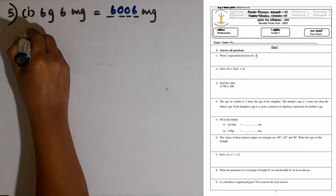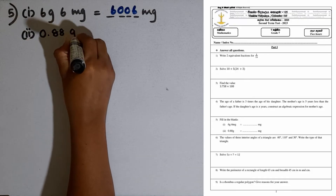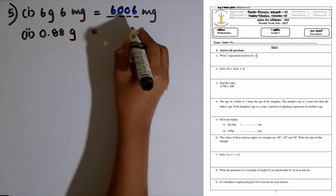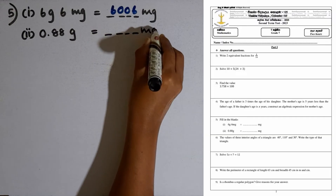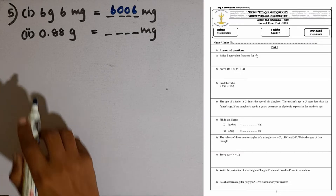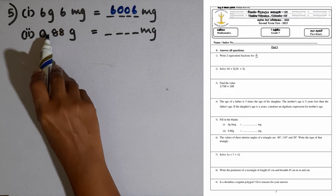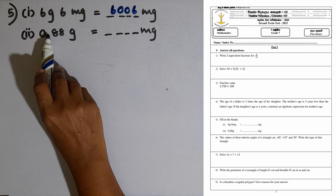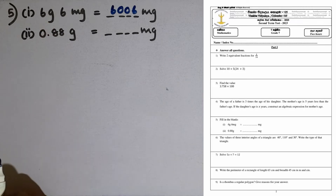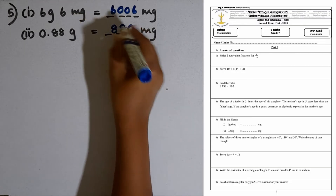Then the second part: 0.88 grams. We have to convert this into milligrams. 1 gram is equal to 1000 milligrams, so when converting grams to milligrams, we multiply by 1000. If you multiply this decimal number by 1000, the decimal point goes three places to the right side. So the answer is 880 milligrams.